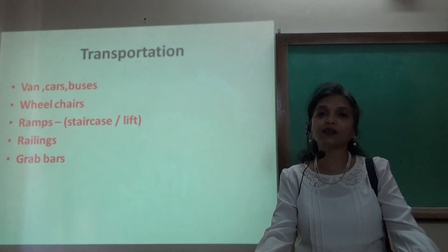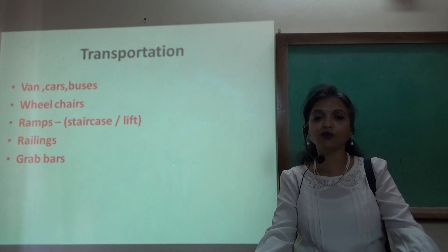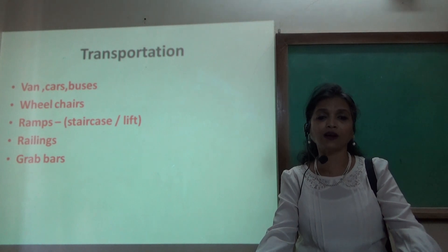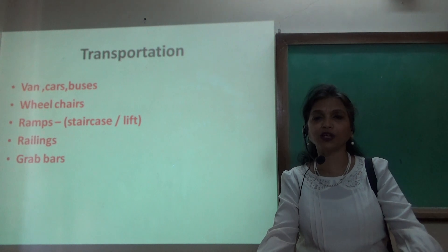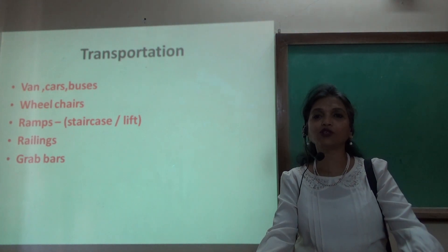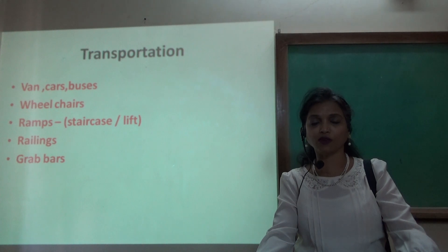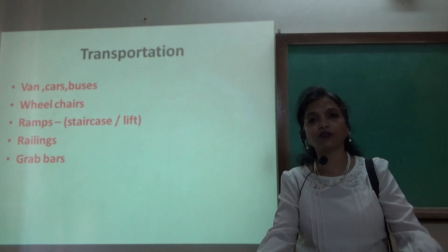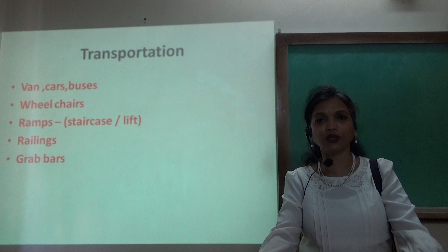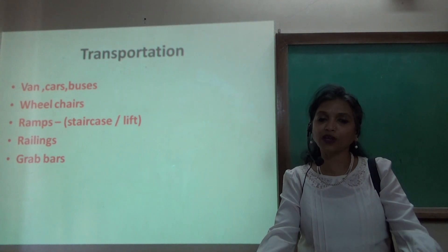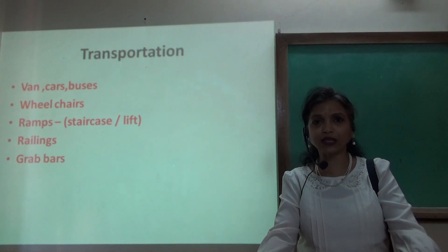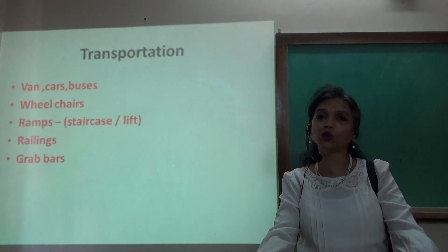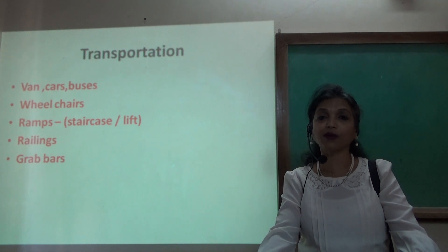When the guest arrives at the hotel, we need to provide transportation — vans, cars, or buses — whichever takes the guest in and out of the hotel should have a ramp at the entrance of the vehicle to have the wheelchair loaded onto it. We should always have wheelchair facility available in the hotel, and along with staircases and elevators, we should also have ramps.